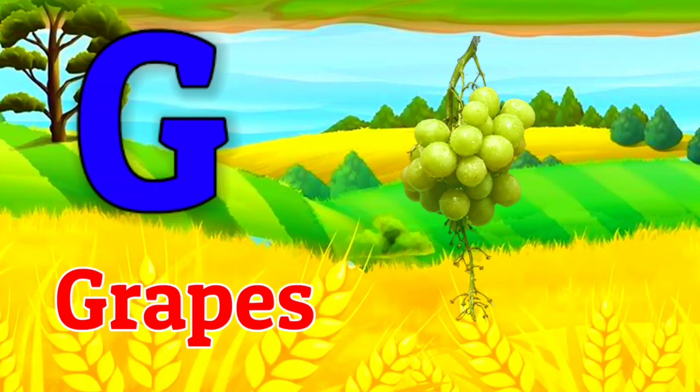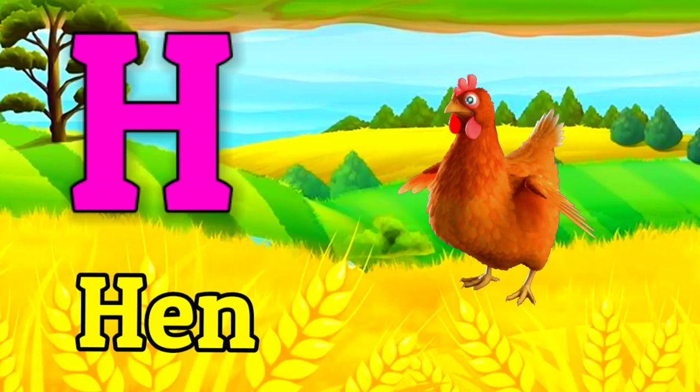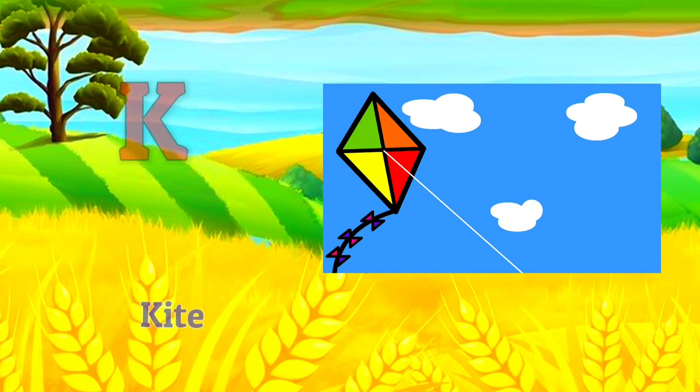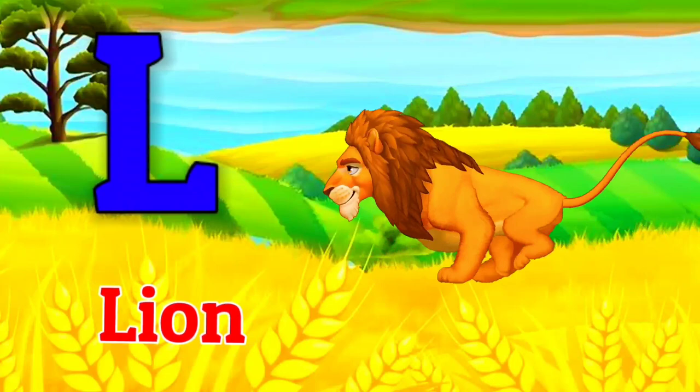G for grass, H for hand, I for ice cream, J for joker, K for kite, L for lion.